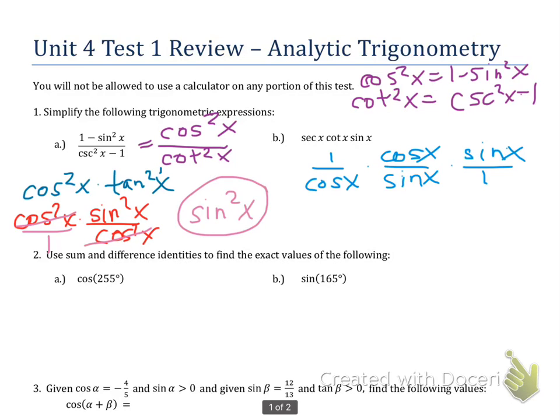So now, since I have everything in terms of sine and cosine, and I'm multiplying all my fractions, I can cancel out what's common on the top and the bottom. So I can cancel out the cosines and the sines, and I'm going to be left over with 1 as my final answer.